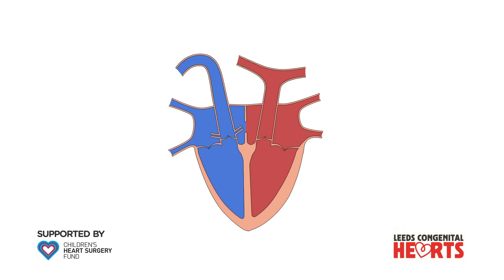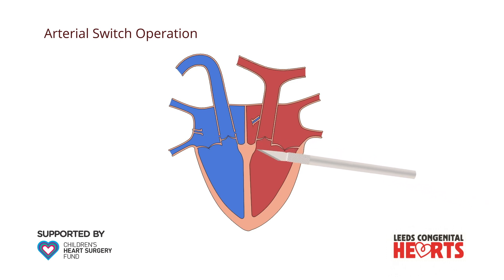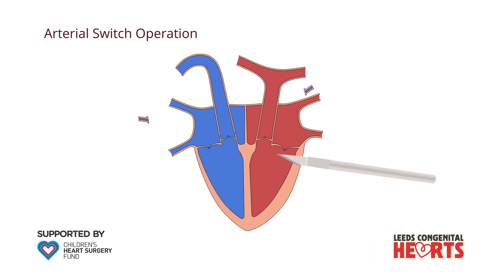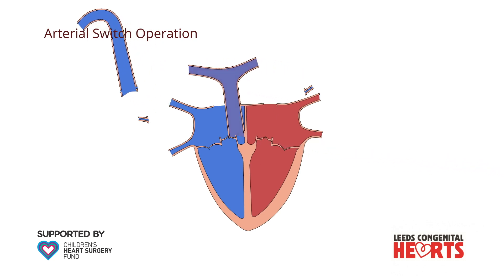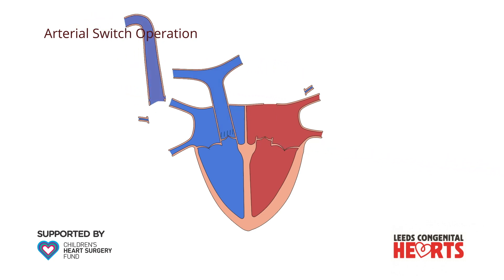Surgical correction of transposition of the great arteries is achieved by performing an arterial switch operation, usually in the first few weeks of life. After opening the chest through the middle of the breastbone, the coronary arteries are detached from the aorta and both the aorta and pulmonary artery are cut just above where they leave the heart. Each artery is moved and reconnected to the correct side of the heart, the aorta to the left ventricle and the pulmonary artery to the right ventricle.